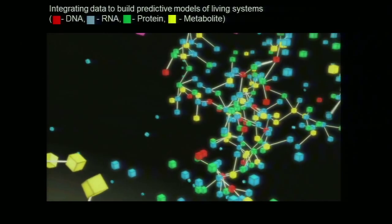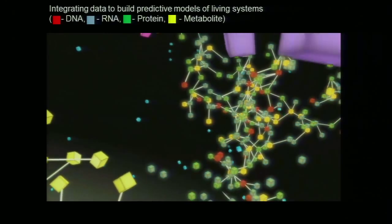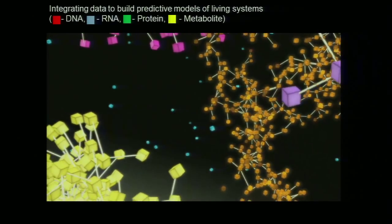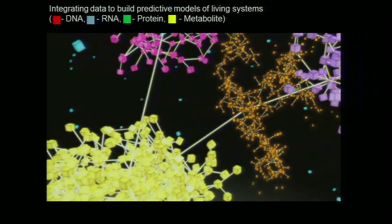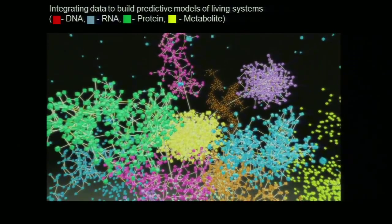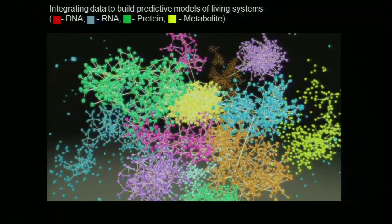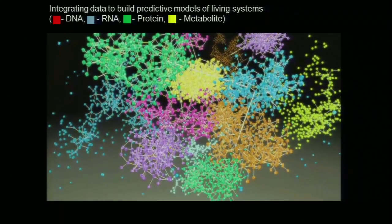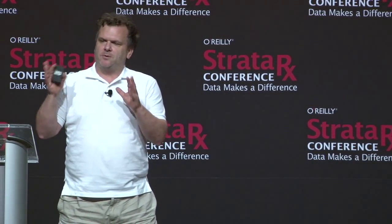At the molecular level, these data are interacting with one another — not in simple linearly ordered pathways that textbooks might lead you to believe. They're highly nonlinear. They're interacting in what forms networks, and these networks form networks of networks to define the complexity of living systems. If we want to understand biology and the true complexity of disease, we need to be thinking at this more network-based level.